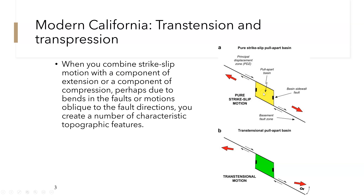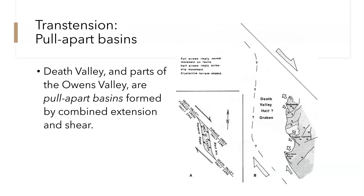Here we have a pull-apart basin because we see a strike-slip fault pulling apart, but there is also extension happening in between — we call this transtensional pull-apart basins. Here's another formation of a transtensional pull-apart basin. We see an area of tension or pulling apart, and then we have the Death Valley and Furnace Creek fault zones on either side. Because these are strike-slip on either side of this area of tension, it creates a pull-apart basin formed from the interaction between the Death Valley fault system and the Furnace Creek fault zone.